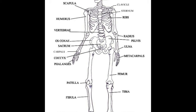A child is born with close to 300 bones; however, as they grow up, the bones fuse together and an adult human skeletal system consists of 206 bones. Below is a labeled diagram and types to help you draw and memorize the different parts of the human skeleton.